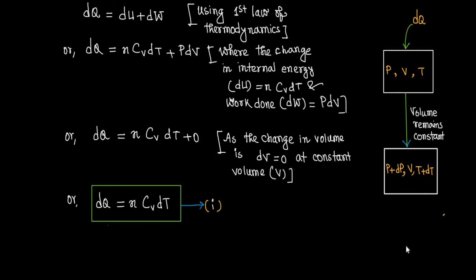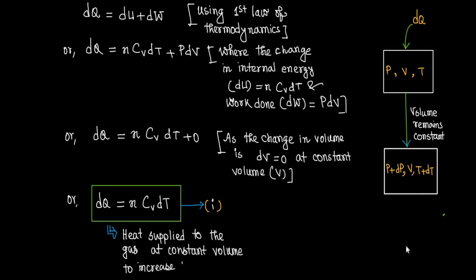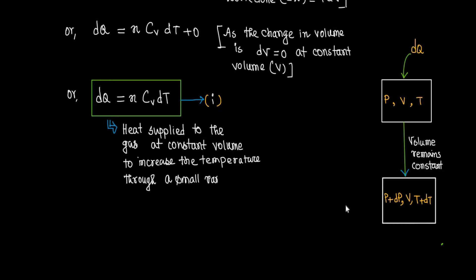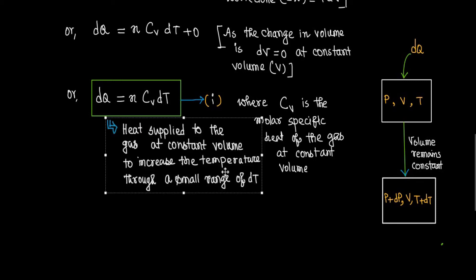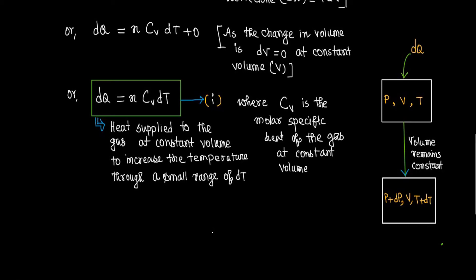Therefore dQ equals nCv dT is the heat energy supplied to n moles of the ideal gas at constant volume to increase the temperature through a small range dT, where Cv is the molar specific heat of the ideal gas at constant volume. Volume remains constant but temperature increases from T to T plus dT.